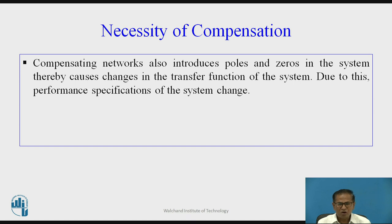Compensating networks also introduce poles and zeros in the system, thereby causing changes in the transfer function of the system. Due to this, the performance of the system changes.